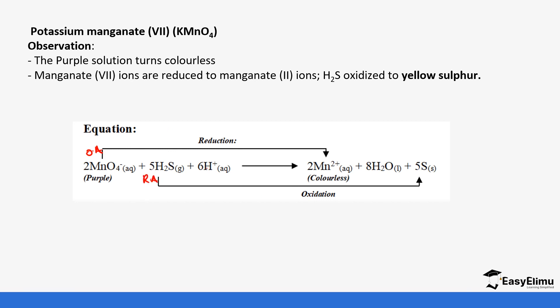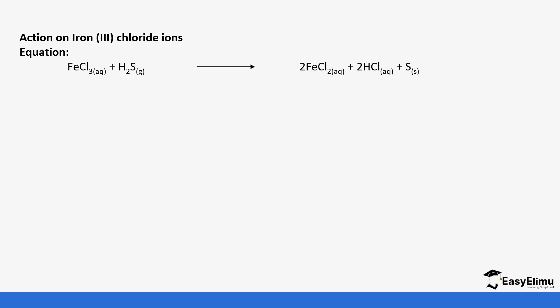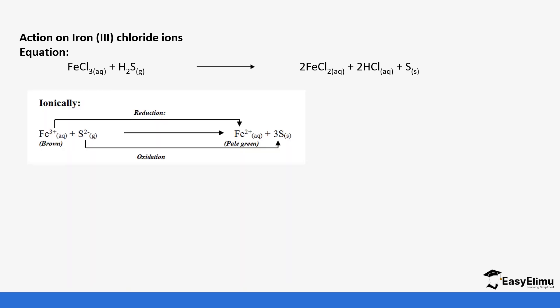These are similar properties to those of sulfur dioxide. Hydrogen sulfide also acts as a reducing agent with iron(III) chloride ions, converting iron(III) ions to iron(II) ions, while itself is oxidized to sulfur. The iron(III) ions undergo reduction, making them the oxidizing agent, and the sulfide ions lose electrons undergoing oxidation, making them the reducing agent. This is similar to the reaction of sulfur dioxide with iron(III) chloride ions.